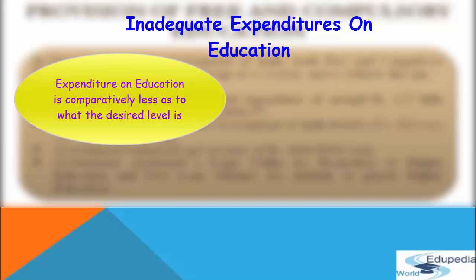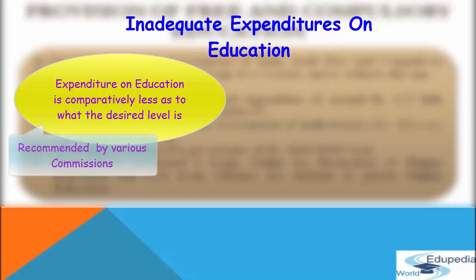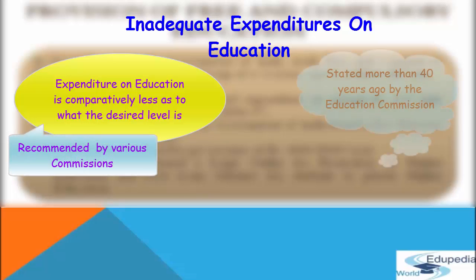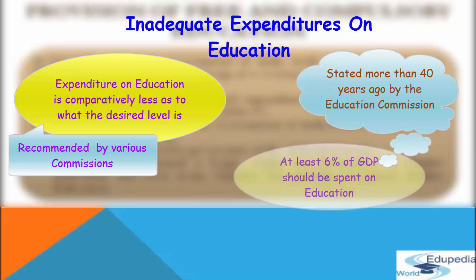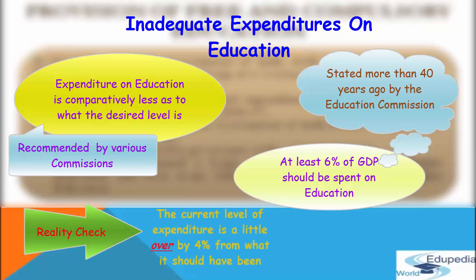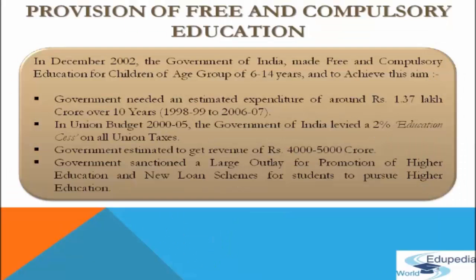Regarding inadequate expenditure on education: the expenditure on education is very less compared to the desired level recommended by various commissions. More than 40 years ago, the Education Commission recommended that at least 6% of GDP should be spent on education. However, the current level of expenditure is little over 4%, which is quite inadequate.